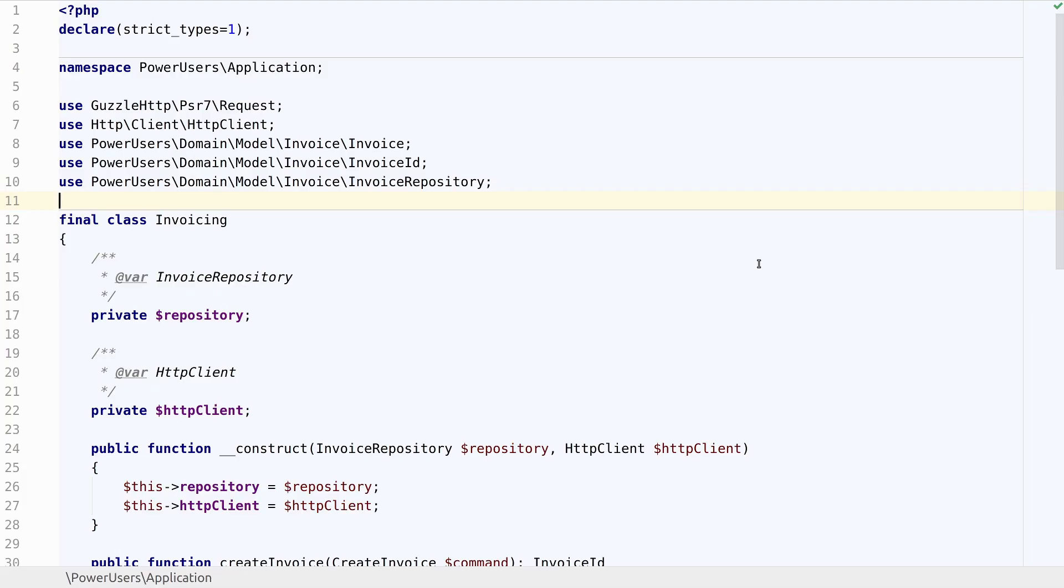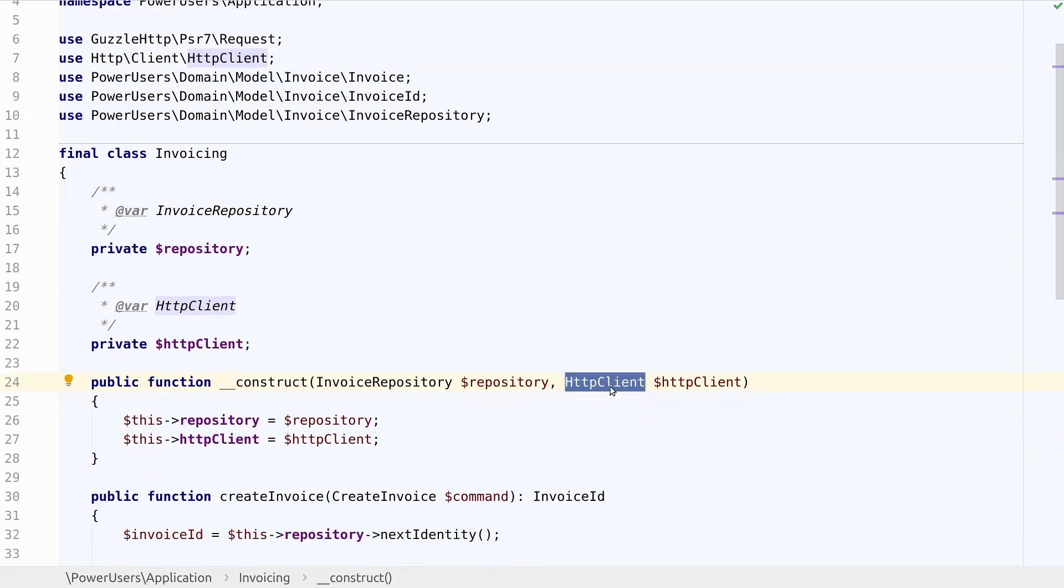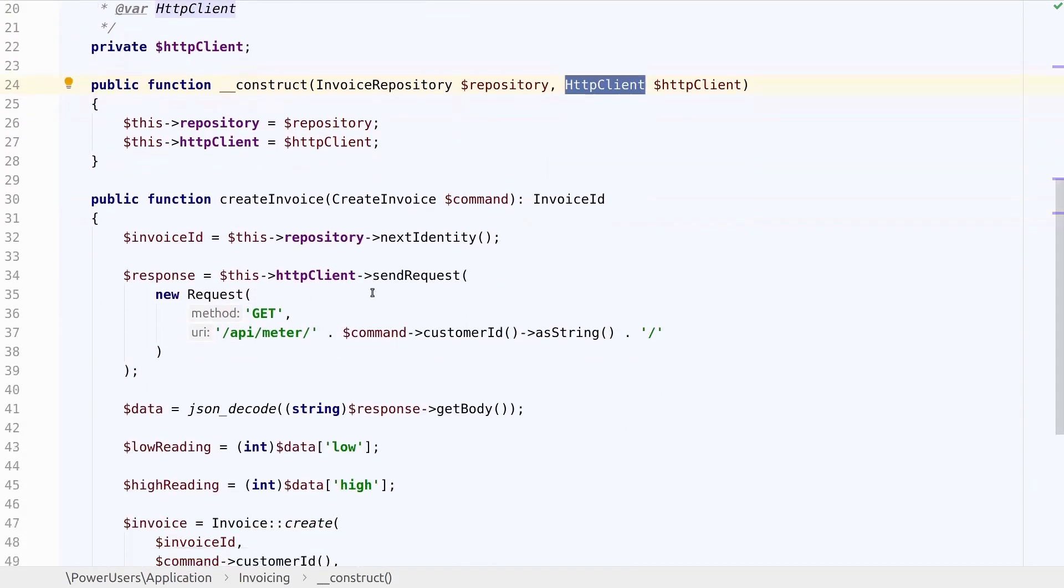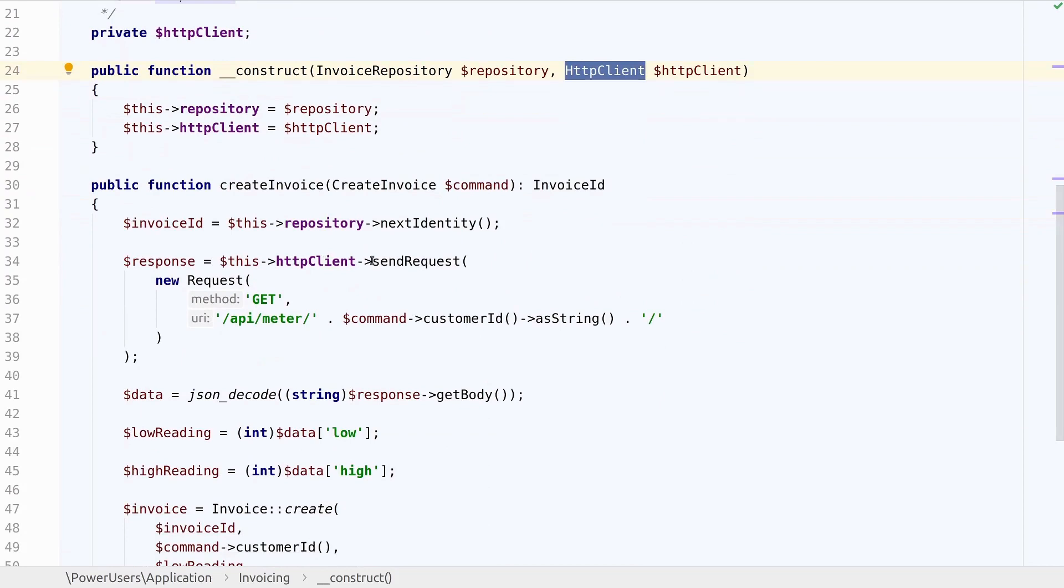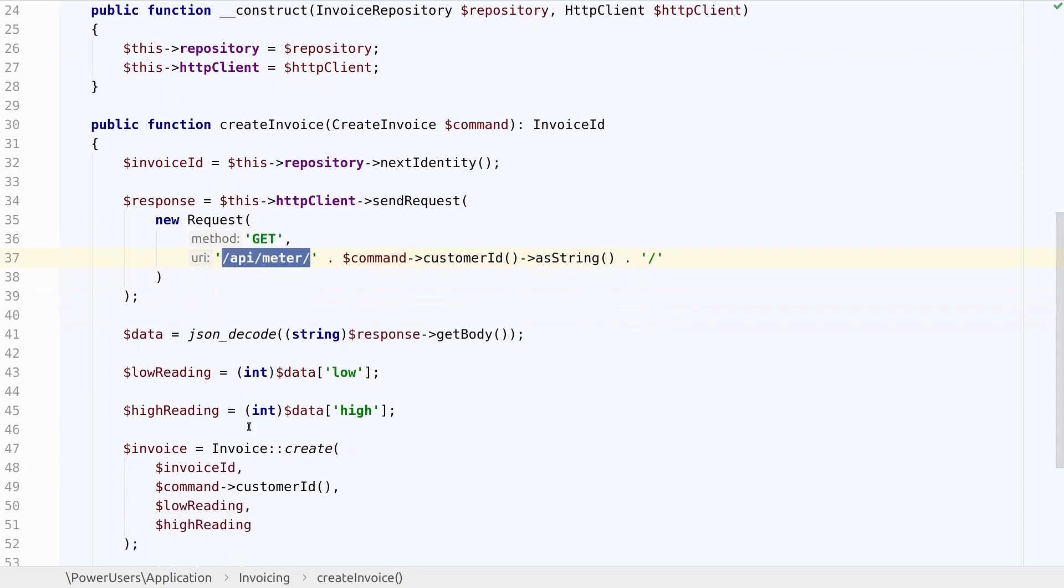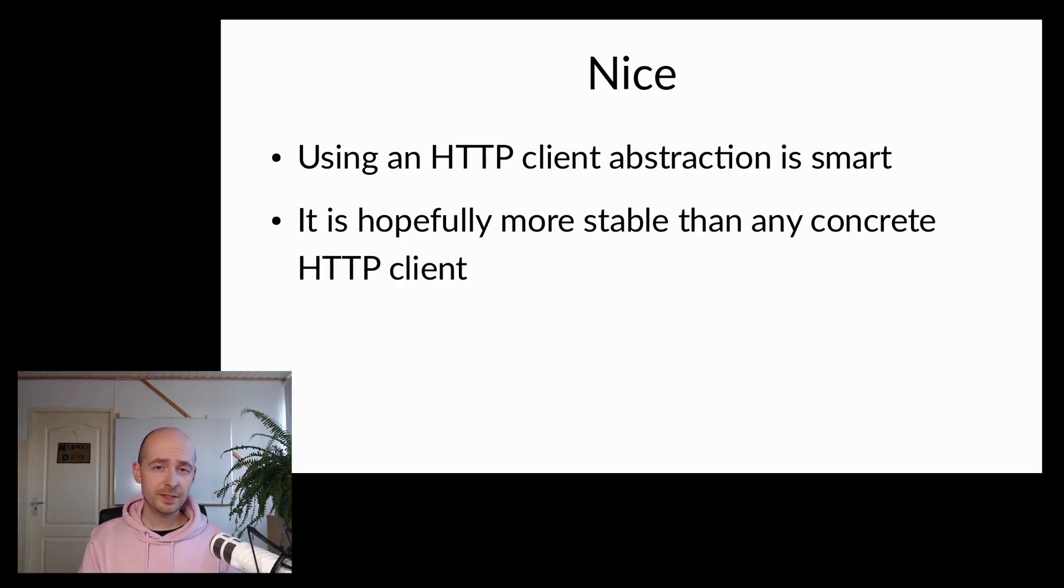Again, after reading some of its documentation we may have figured out how to use it. They use the HTTP client interface, which is defined by PSR 18 by the way, and we can inject it here, and later we make a request in more or less the same way, so not much has changed here. It's again a GET request to the API meter, and we still decode the response in the same way as we did before. This is nicer. Using an abstraction for a tool like an HTTP client is a smart thing to do in general, because it's hopefully more stable than any concrete HTTP client we might install in our project.